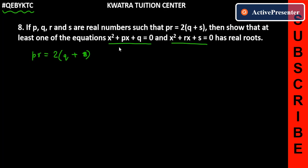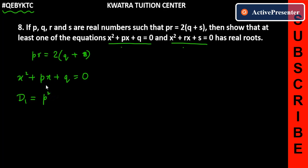So how do we show this? First, we will compute the discriminant D for both equations. We have the first equation: X squared plus PX plus Q equals 0. Let's find D1. D1 is B squared minus 4AC. In this case, B is P, so it becomes P squared minus 4 times 1 times Q.